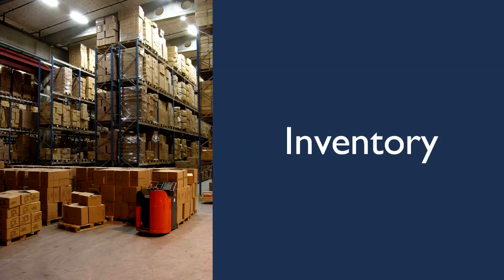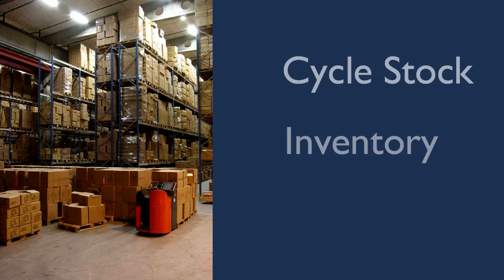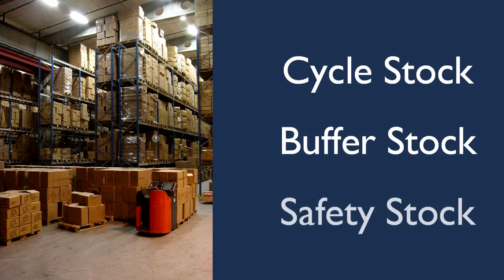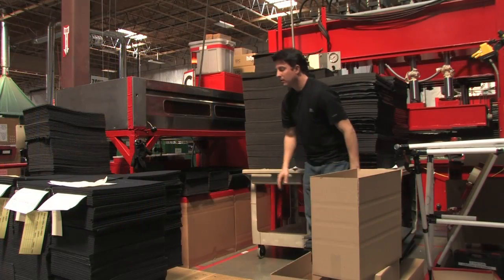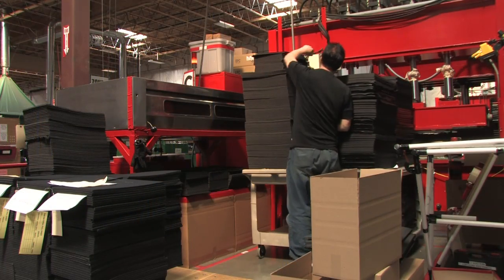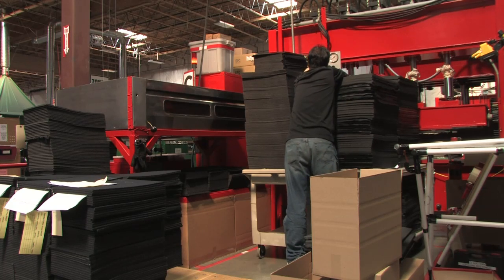Next, we come to the waste of inventory, which is any work or material on hand other than what's needed right now to satisfy customer demand. Some examples of inventory waste are excess raw materials, work in process, finished goods, supplies, and spare parts. In an upcoming module, we'll spend more time exploring the different types of inventory we might have on hand, such as cycle stock, buffer stock, and safety stock. In this example, we see Isaac surrounded by piles of inventory, making it hard for him to even know what to grab.